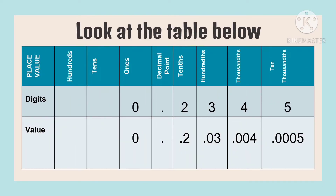The first row in the table shows our place values. We can see the place values of whole numbers and the place values of decimal numbers. How do we identify which part is the decimal number? They are separated by the decimal point — the decimal numbers are to the right of the decimal point, and the whole numbers are to the left.